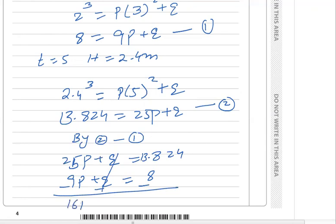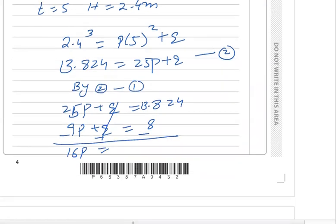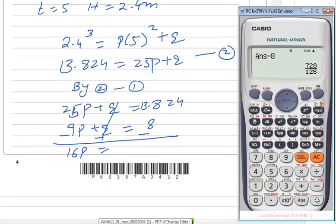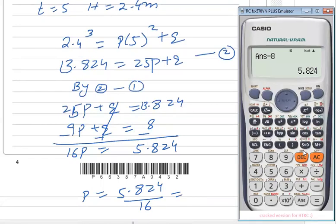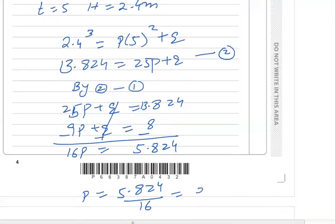25 minus 9 gives 16p = 13.824 minus 8 = 5.824, so p = 5.824 ÷ 16 = 0.364. The value of p is 0.364, which is already to 3 significant figures. Now substituting this value of p into equation one.